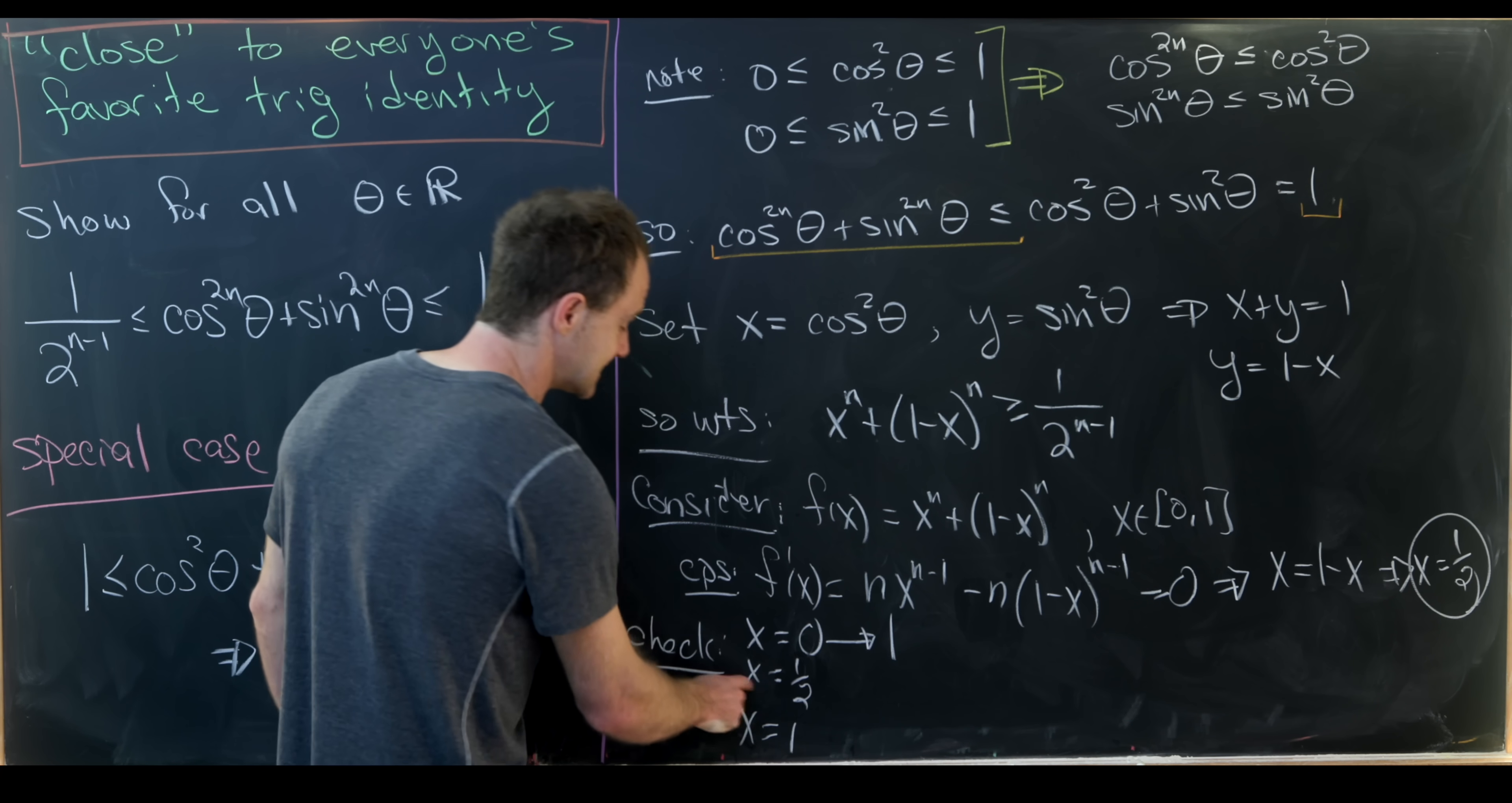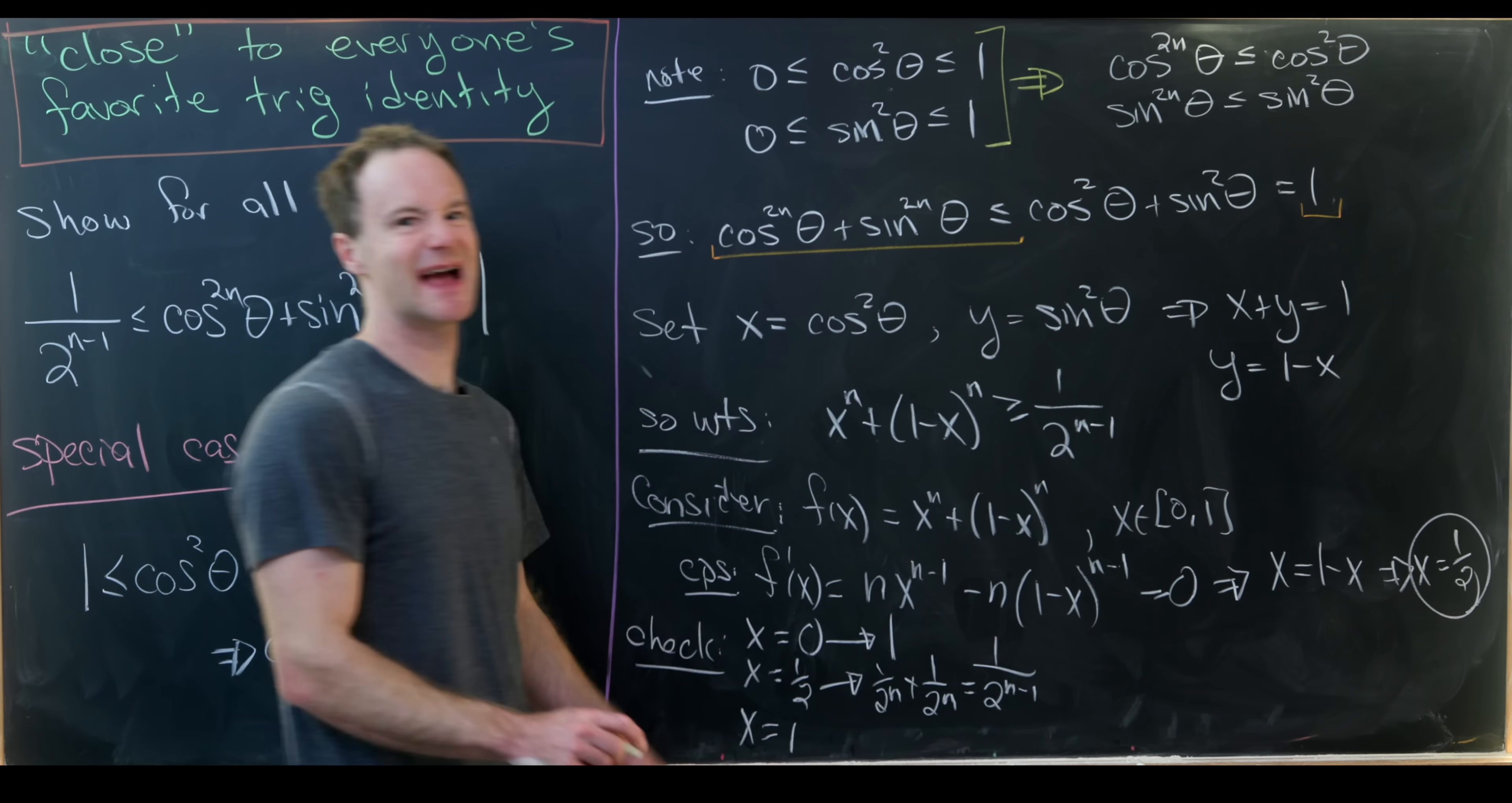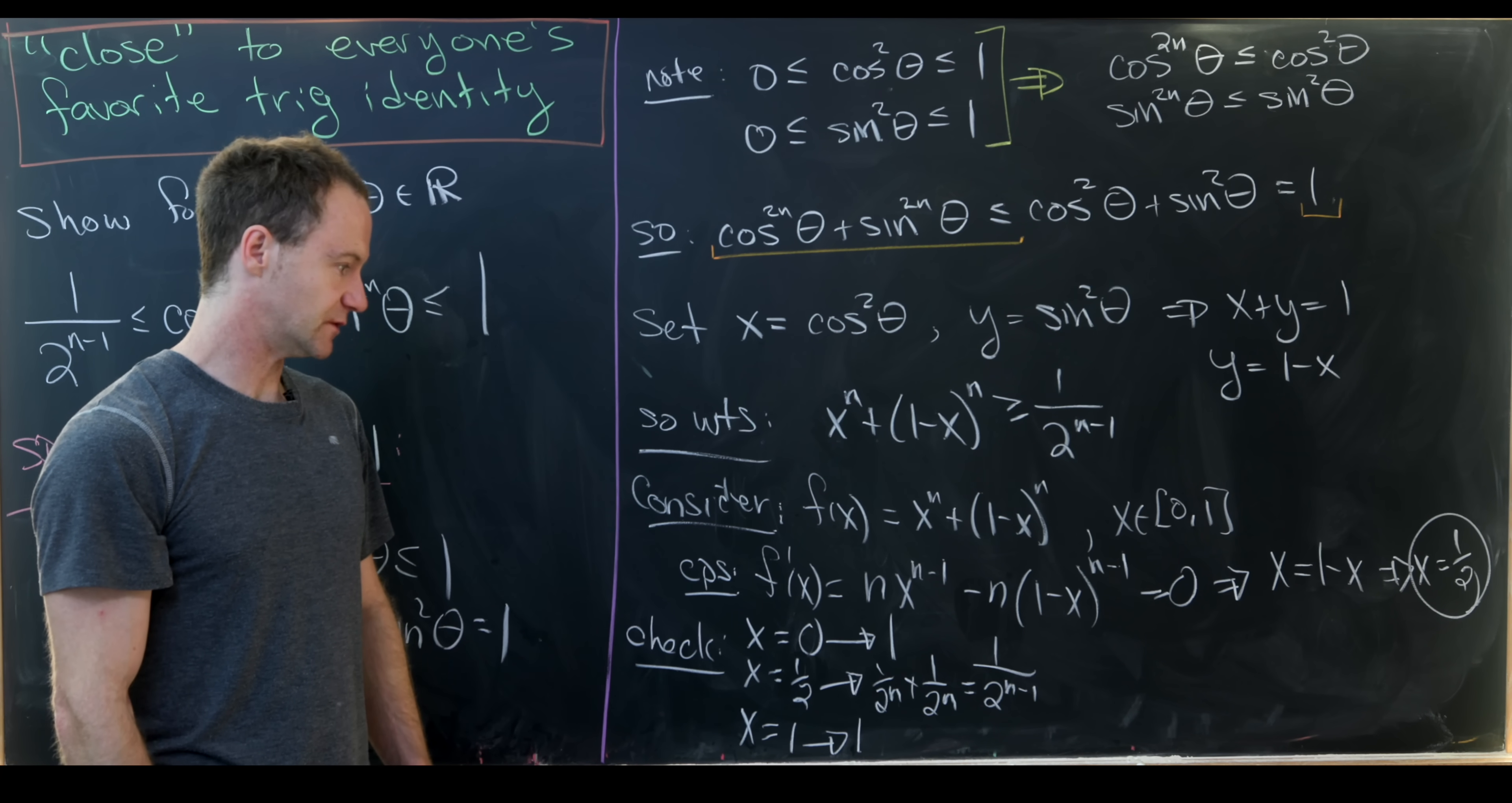And then x equals half will give us 1 over 2 to the n plus 1 over 2 to the n. But 1 over 2 to the n plus 1 over 2 to the n is 1 over 2 to the n minus 1, just by adding those together and then canceling down. And then plugging in x equals 1, we get f of x is also equal to 1, or f of 1 is equal to 1.